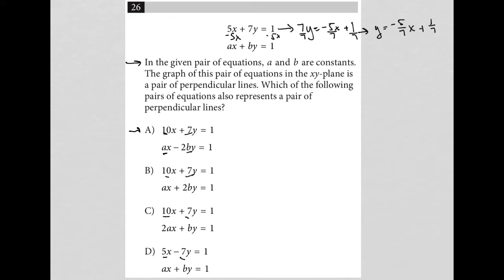That's important because when I convert this second equation, I'll use a different color, into slope-intercept form by subtracting Ax from both sides, leaving me with By equals negative Ax plus 1, dividing everything by B. The slope-intercept form for the second equation would be y equals negative A over B x plus 1 over B.